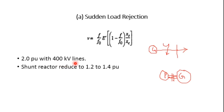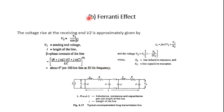The voltage at the sending end is affected by the line length, the short circuit MVA at the sending end bus, and the reactive power generation of the line, considering both line capacitive reactance and shunt or series capacitors together. Hence this shunt reactance reduces the overvoltage to 1.2 to 1.4 times the rated value.